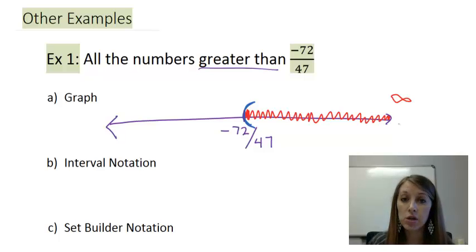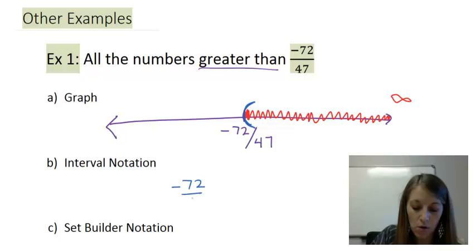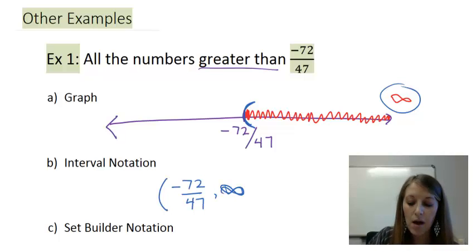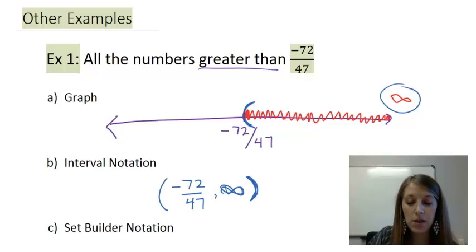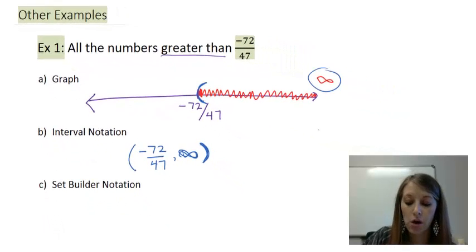Interval notation goes from the smallest number to the largest number. The smallest number on this graph is negative 72 over 47, and since it's not included it gets a parentheses on the left. The largest number is infinity, so I put infinity on the right. The answer for infinities is always a parentheses, because we can never actually reach the endpoint to include it — whether positive or negative infinity, it's always a parentheses.